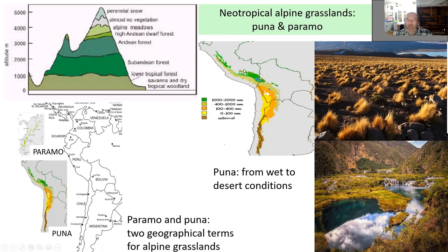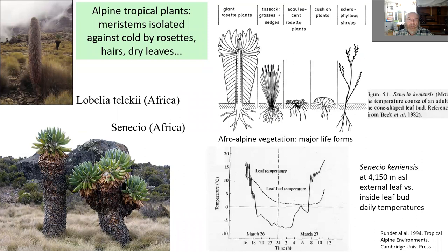Some plants at the limits of the timberline protect their growing meristems by all kinds of insulation. It can be leaf rosettes, hairs, or dry dead leaves, as you can see in Senecio. Measurements show this indeed works: when looking at Senecio, the leaf temperature goes way below freezing to minus five degrees Celsius, while the leaf bud temperature is always above zero.